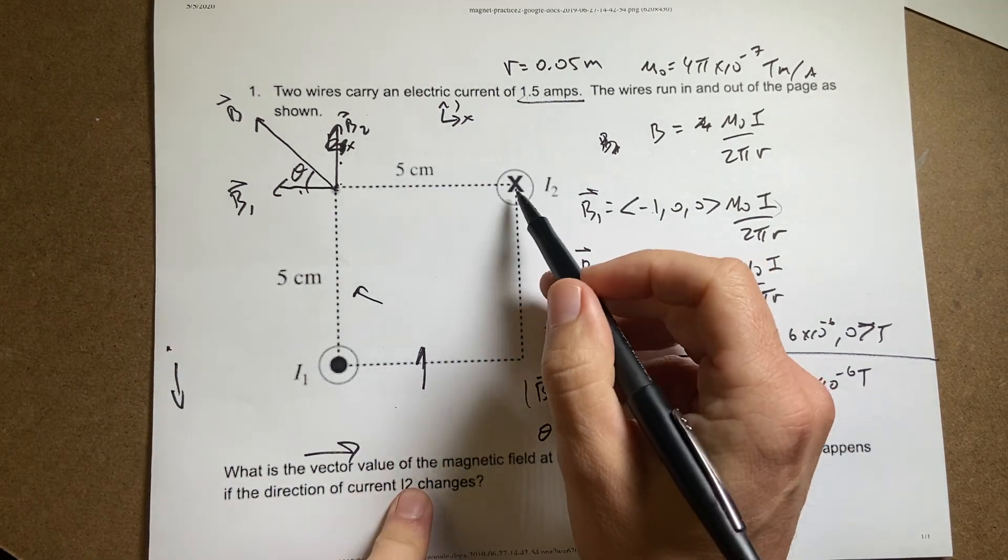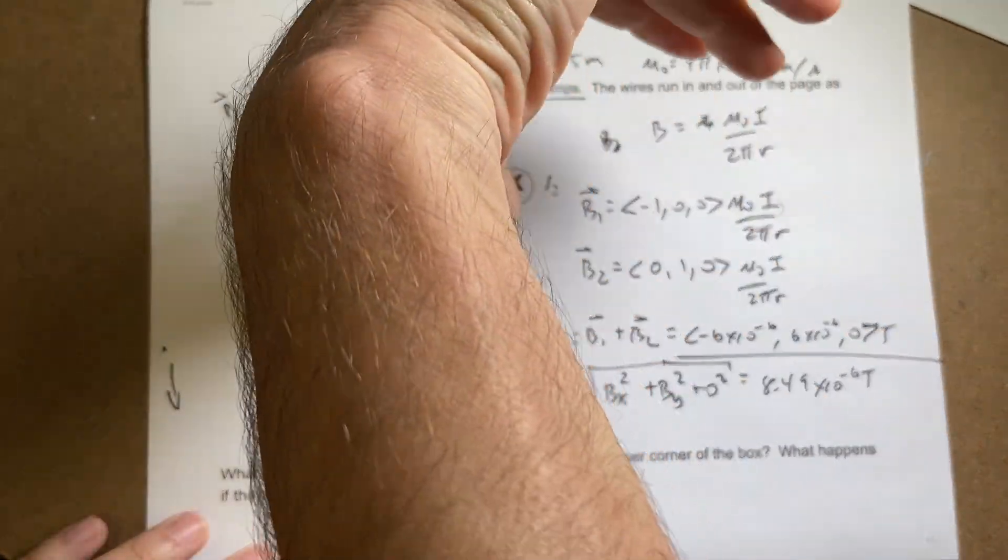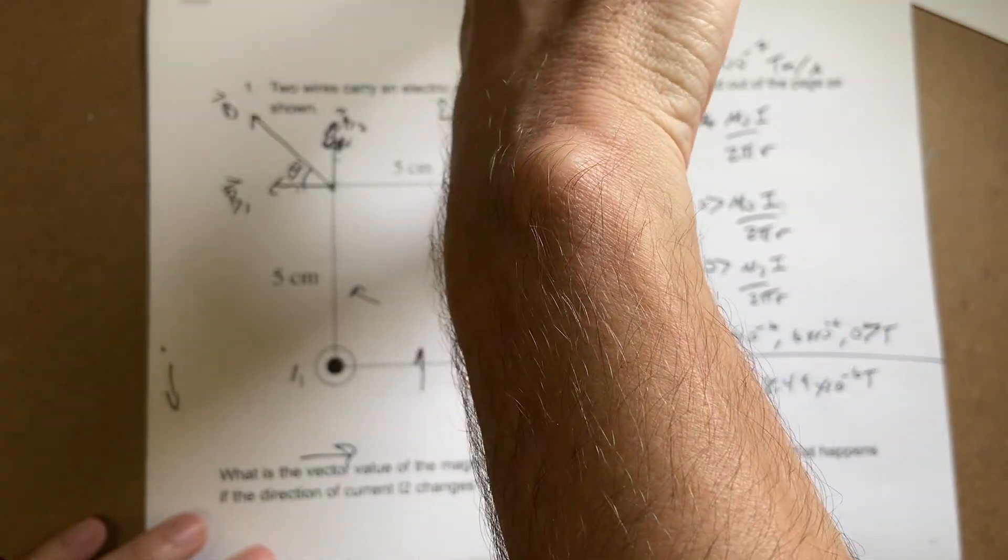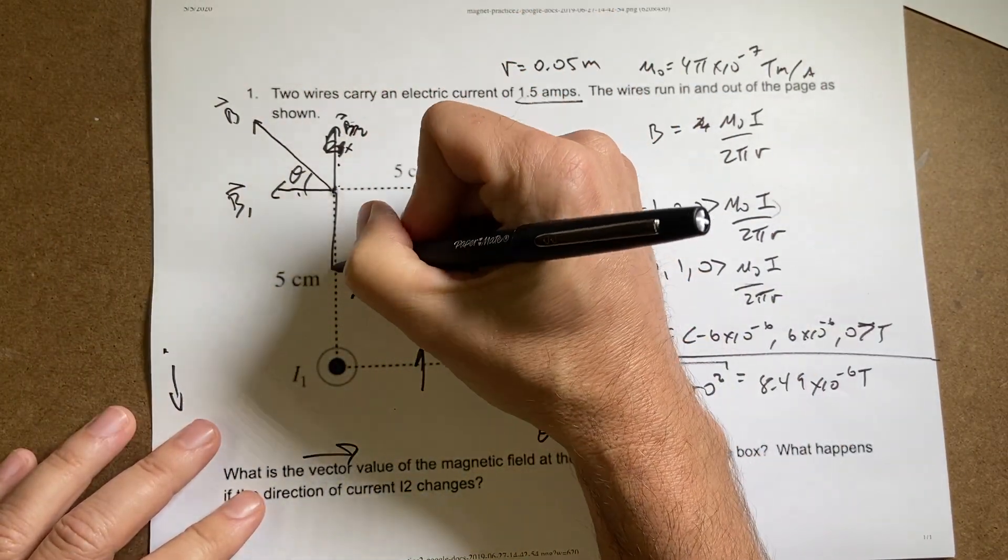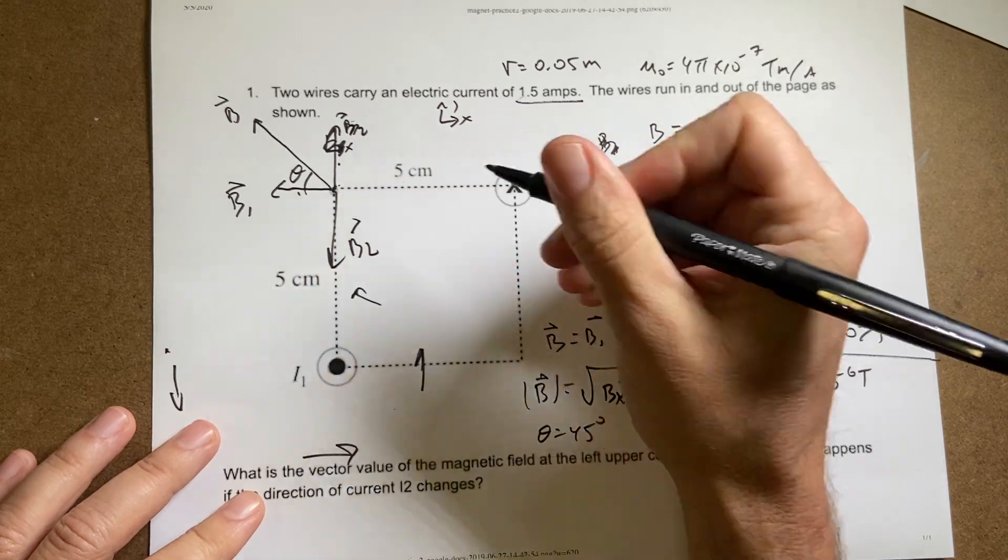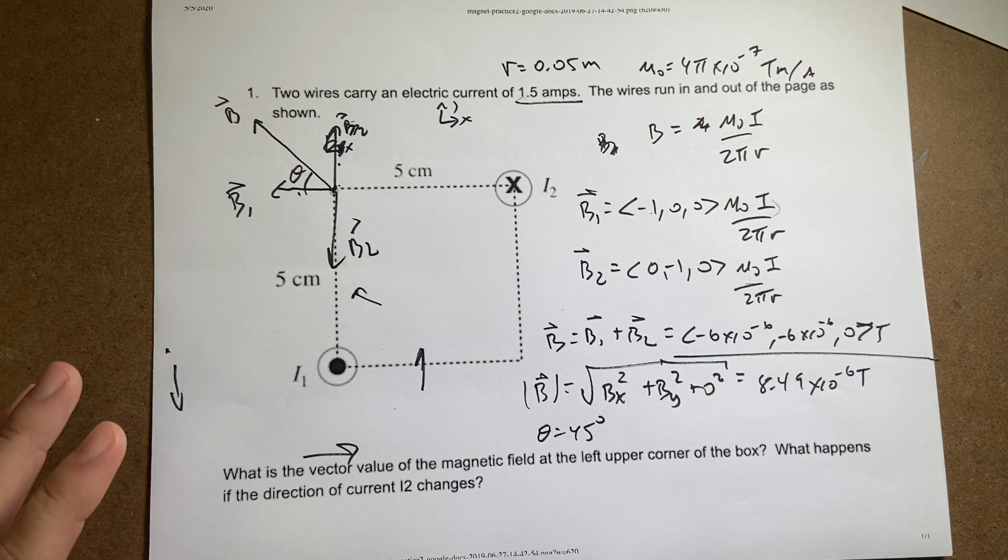So what if I change the direction of this current? Well, now if I change that so it's in this direction, now I'm going to use my... I did that wrong. Look, if that's going this way, it should be going down. Sorry. I can fix that. Everything else is fine.